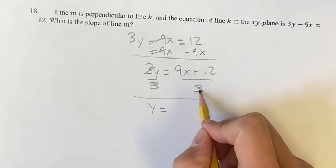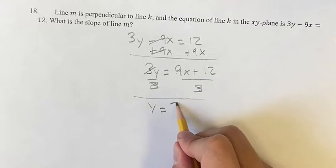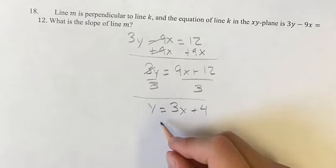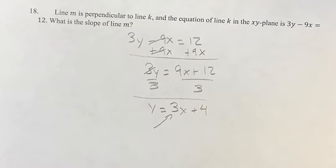We get y is equal to 9x divided by 3. 9 divided by 3 is 3x plus 12 divided by 3 is 4, which gives us that the slope of line k is equal to 3.